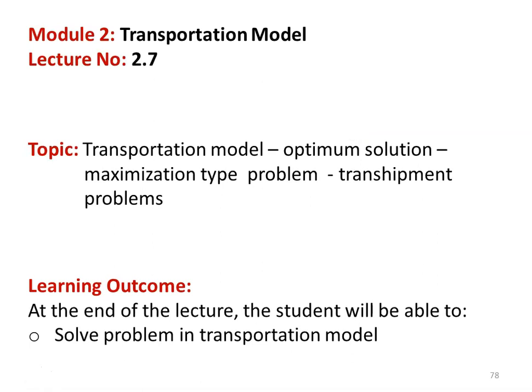In the earlier six lectures in the Transportation Model, we discussed the minimization type of problem where the objective was to minimize the overall transportation cost. Here in this lecture, we are going to discuss the transportation model to find the optimum solution for the maximization type of problem. The solution procedure is originally only for minimization, but it can be extended to maximization if the matrix is profit to be maximized. We also discuss the transshipment type of problem.